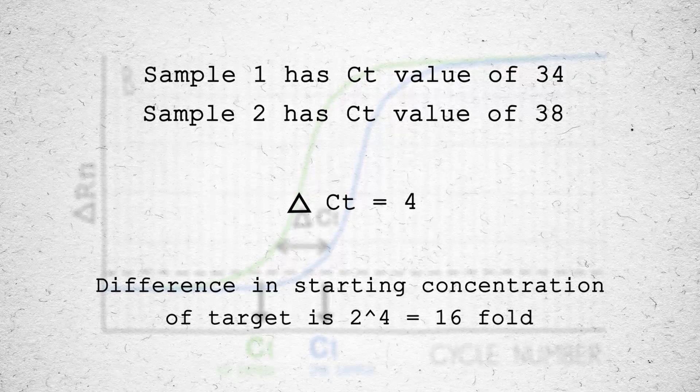The difference in starting target concentration between two samples can be expressed as 2 raised to the power of the CT difference. A CT difference of 4 corresponds to 2 to the fourth power, or a 16-fold difference in the starting concentrations of target sequence.